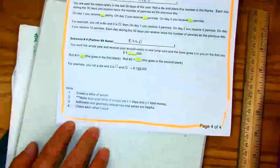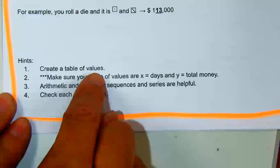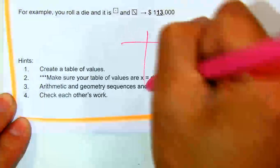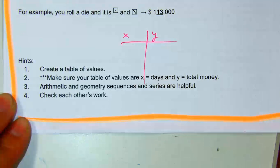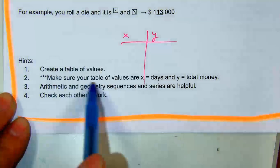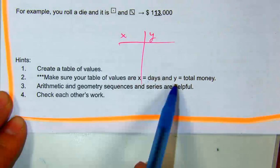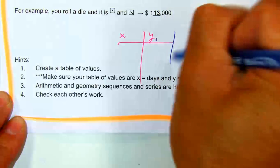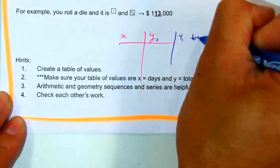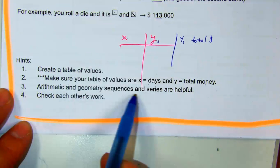Now here are a couple of hints — let me read those to you at the bottom. Create a table of values. Make sure your table of values has X as days or months, and Y as total money. Arithmetic and geometric sequences and series are helpful.